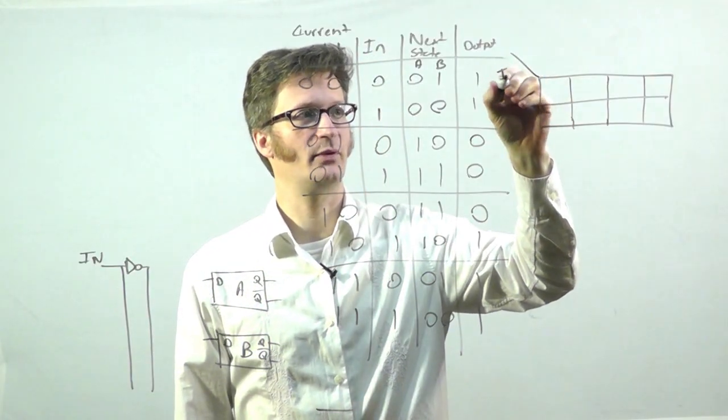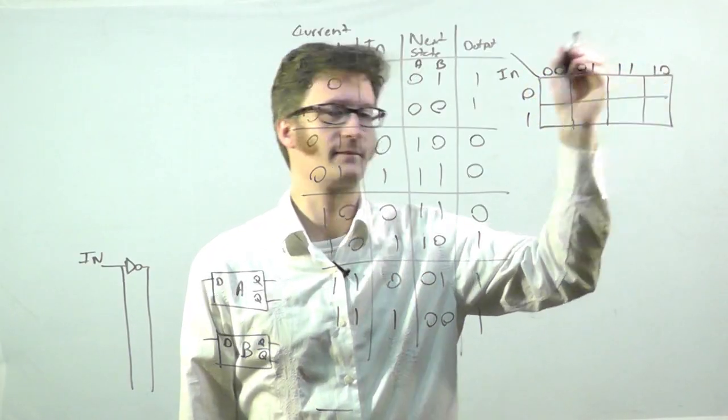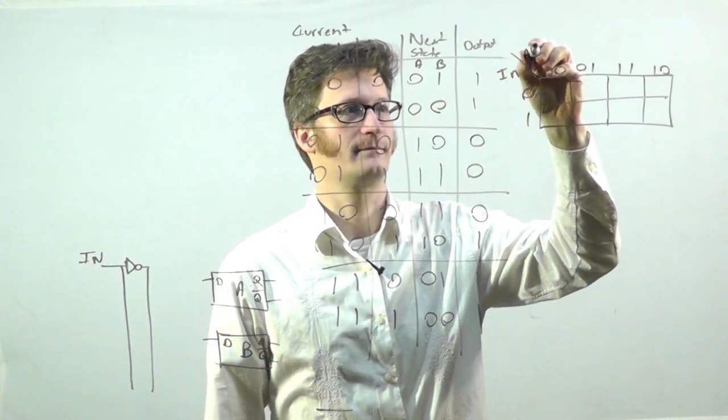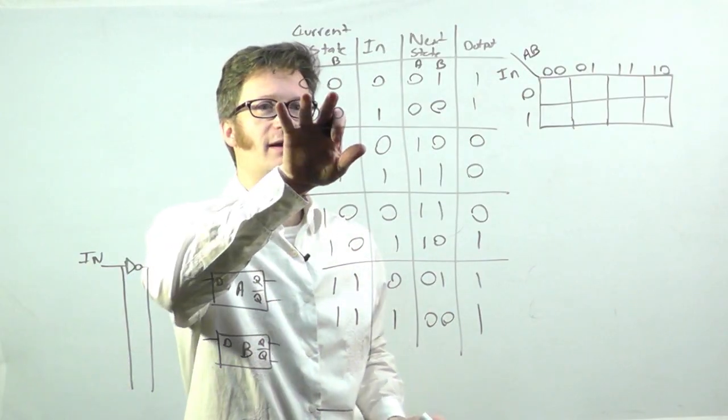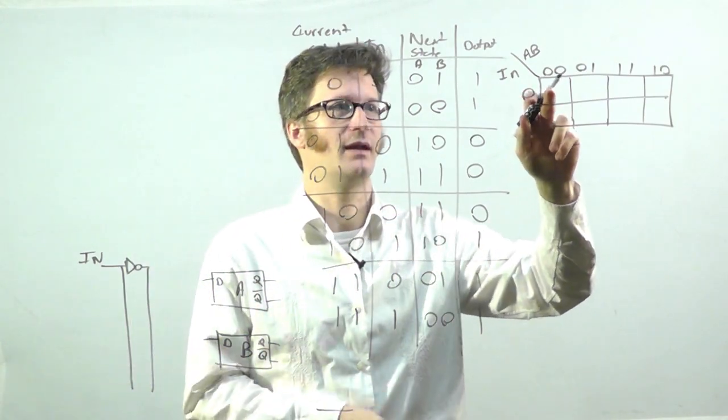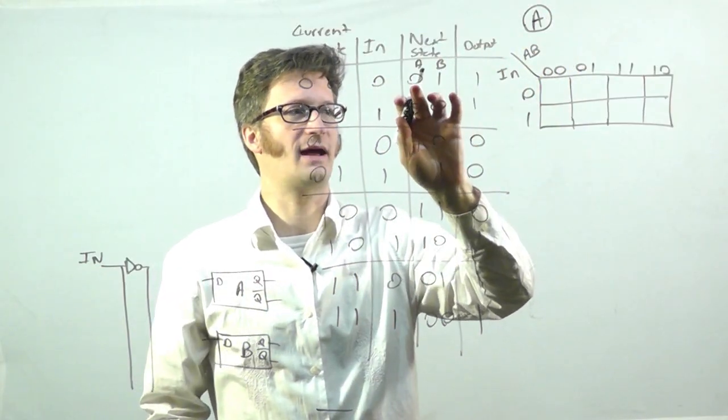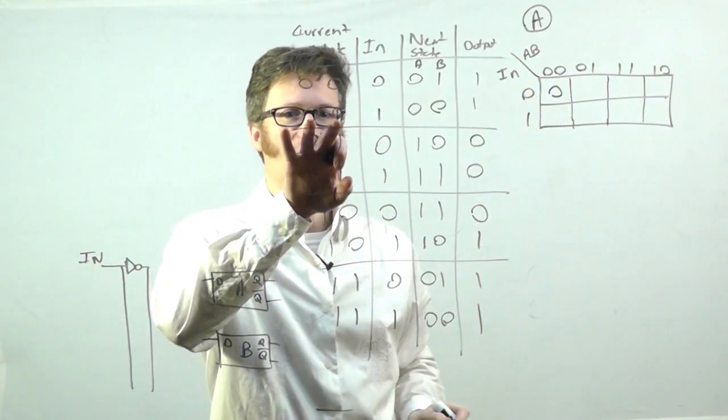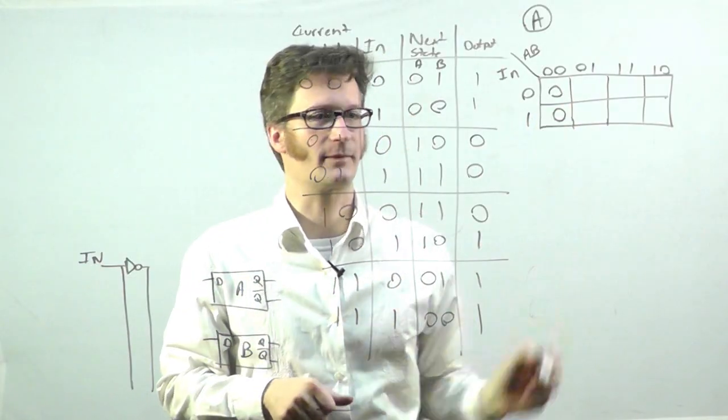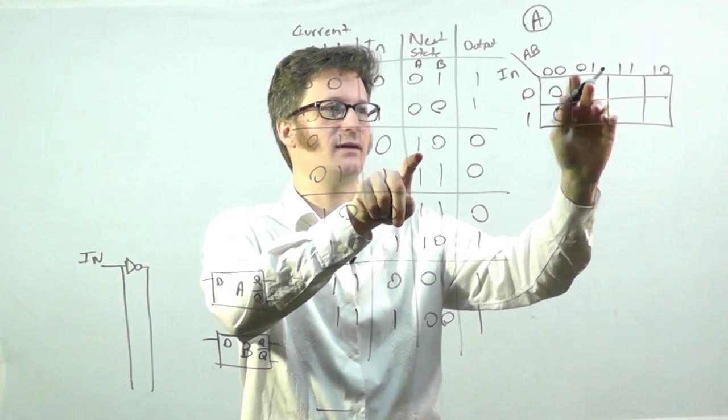Okay, and what I have here is my input. And this is my current state A and B. So, if my current state is 0, 0, and my input is 0, that corresponds to this cell here. And I'm making this for my A. So, that needs to have a 0 put in there. If it's 0, 0, and 1, which corresponds to this one, I need to have a 0 here. If it's 0, 1, and 0, that's here, I need to have a 1.